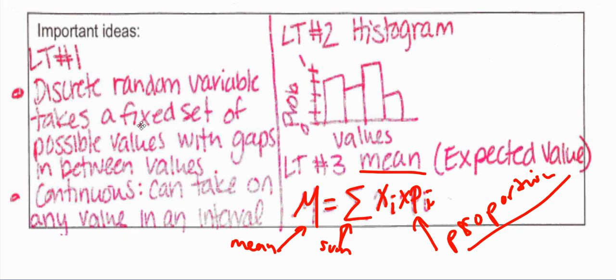We're talking about 6.1, discrete random variables, and the difference between them and continuous random variables. Discrete random variables take a fixed set of possible values with gaps between them. When you're talking about people in your family, this is a very common example. These are discrete random variables.